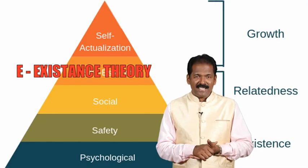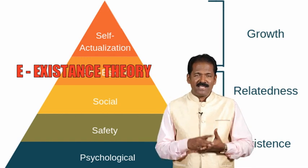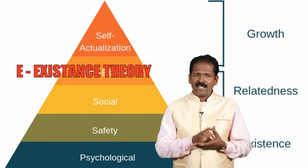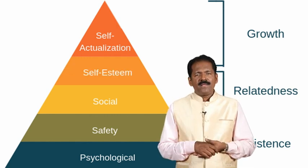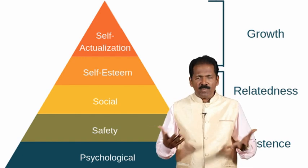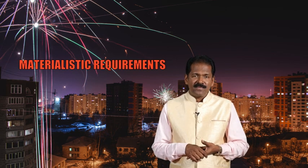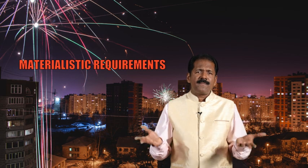Let us start with the existence need. E stands for existence — it covers the basic requirements. Abraham Maslow's base levels, physiological needs and safety needs, together come under existence. These are the basic things without which we cannot function properly as a human being. An employee won't be able to work properly if he doesn't have food, shelter, and the basic necessities. Safety here means economical security as well.